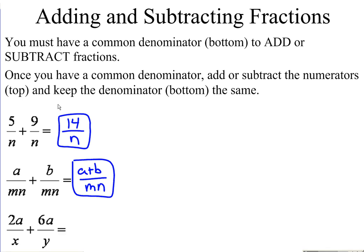Third one, 2a over x plus 6a over y. This time we do not have a common denominator. So what we need to do is rewrite each one of these fractions with our common denominator, which is x times y. Out of the first fraction to go from a denominator of x to a denominator of xy, I'm missing the y, which means that I need to multiply by y. Out of the second fraction to go from y to xy, I'm missing an x, so I need to multiply the second one by x.